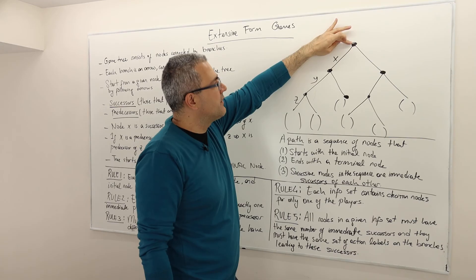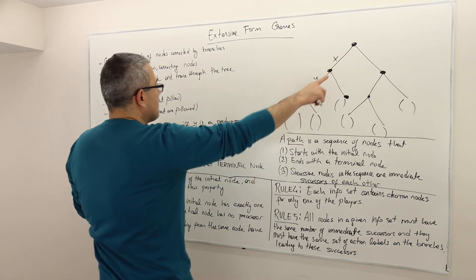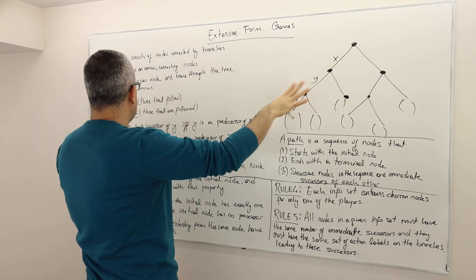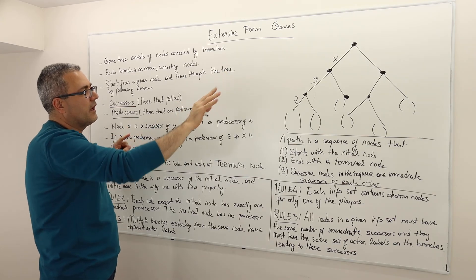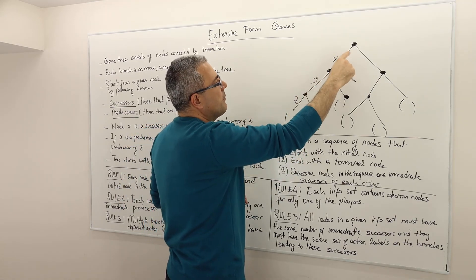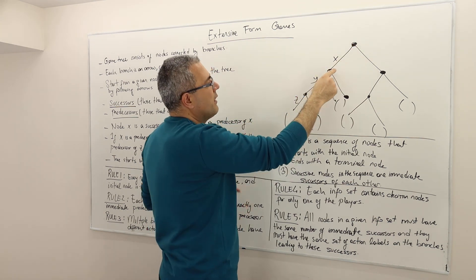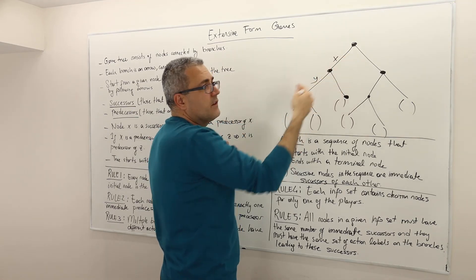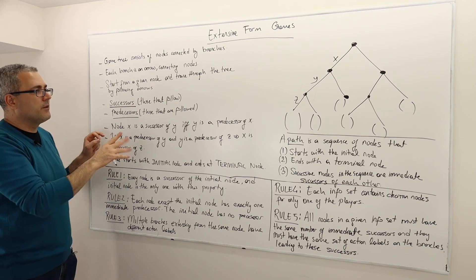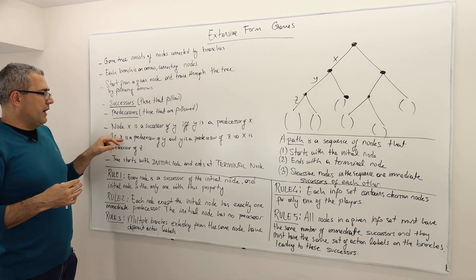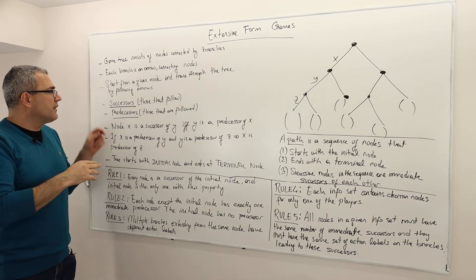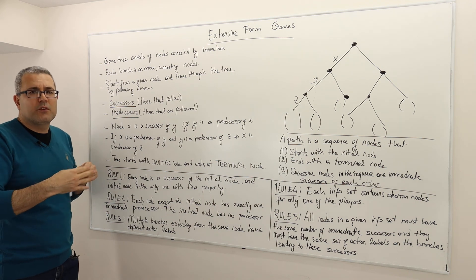To be careful: if this node is X and this node is Y, then Y is a successor of X and therefore X is a predecessor of Y. If a decision node X is a predecessor of Y and Y is a predecessor of Z, then X must also be a predecessor of Z. So this idea of successor and predecessor is a transitive relation.